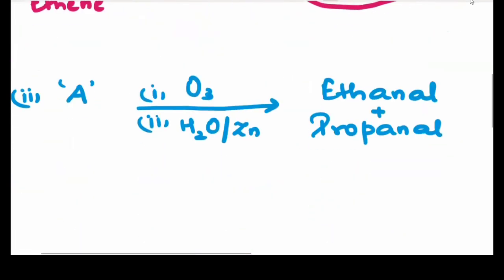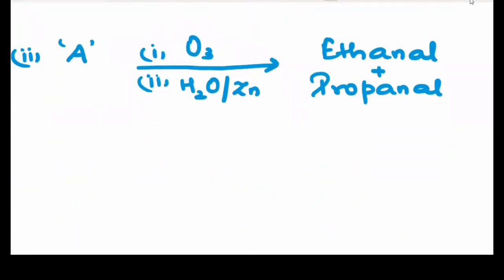Let us proceed ahead with the next question. A on ozonolysis gives ethanol and propanol. So as I said, first of all, write down the structure of ethanol. So ethanol is CH3CHO plus propanol is CH3CH2CHO.